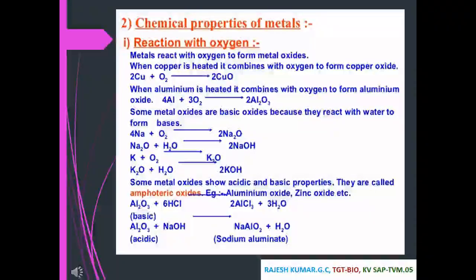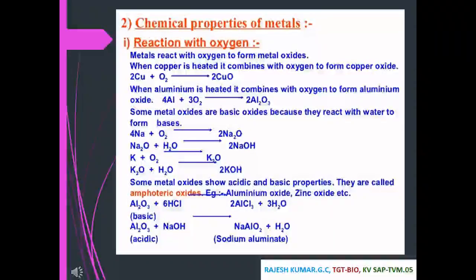Some metal oxides are basic oxides because they react with water to form bases. For example: 4Na + O₂ gives 2Na₂O, and Na₂O + H₂O gives 2NaOH. Similarly, potassium: 2K + O₂ gives K₂O, and K₂O + H₂O gives 2KOH. Some metal oxides show both acidic and basic properties — they are called amphoteric oxides. Examples include aluminium oxide and zinc oxide.